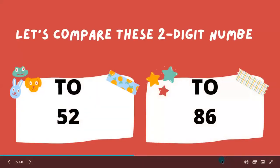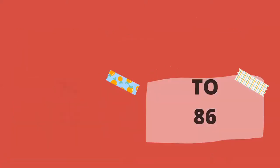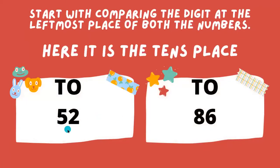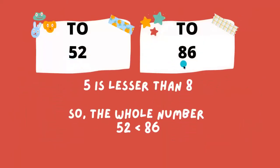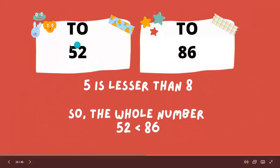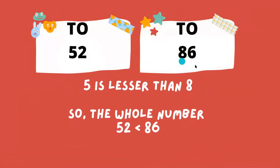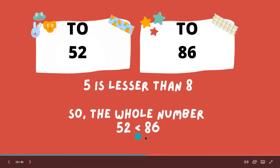Let's compare these two-digit numbers: 52 and 86. Start with comparing the digit at the leftmost place of both numbers — here it is the tens place. Five is less than eight, so the whole number 52 is less than 86. We can also write it as 52 is less than 86 using the less than sign.